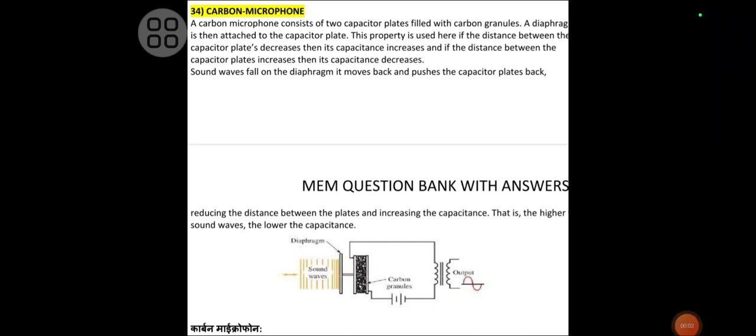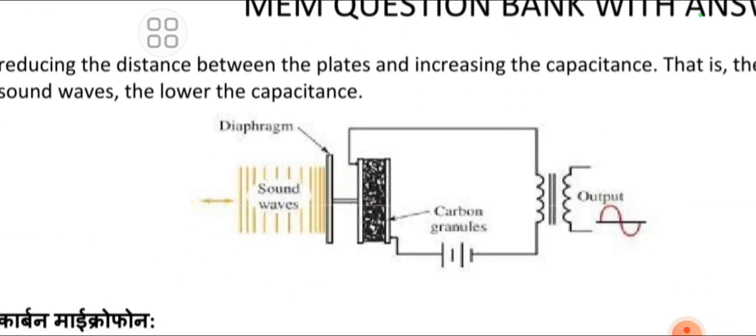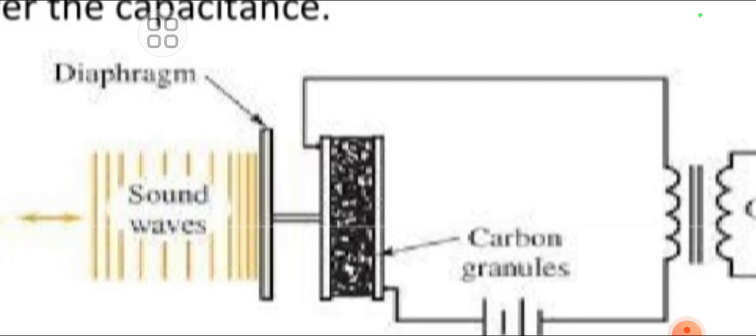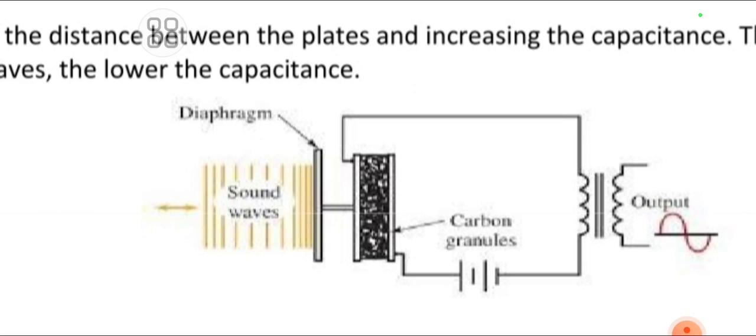Good morning students. Today we are going to discuss carbon microphone. Why is it called a carbon microphone? Because in the capacitor there are two capacitor plates, and in between the capacitor plates carbon granules are placed, so it is called a carbon microphone. As shown in the figure...